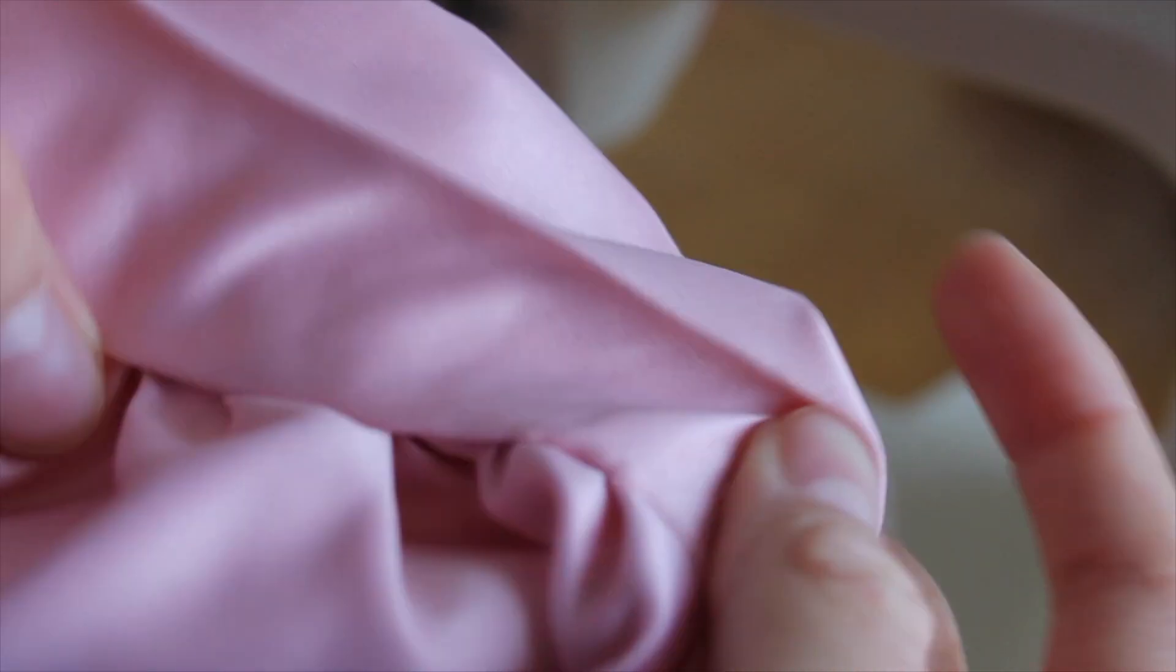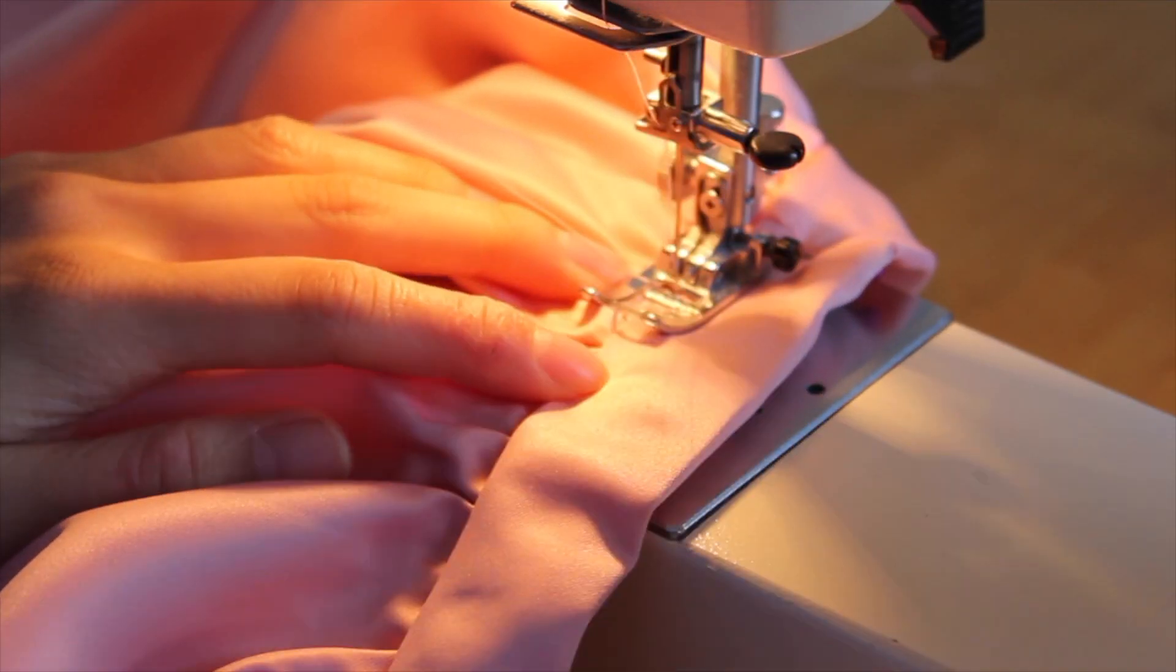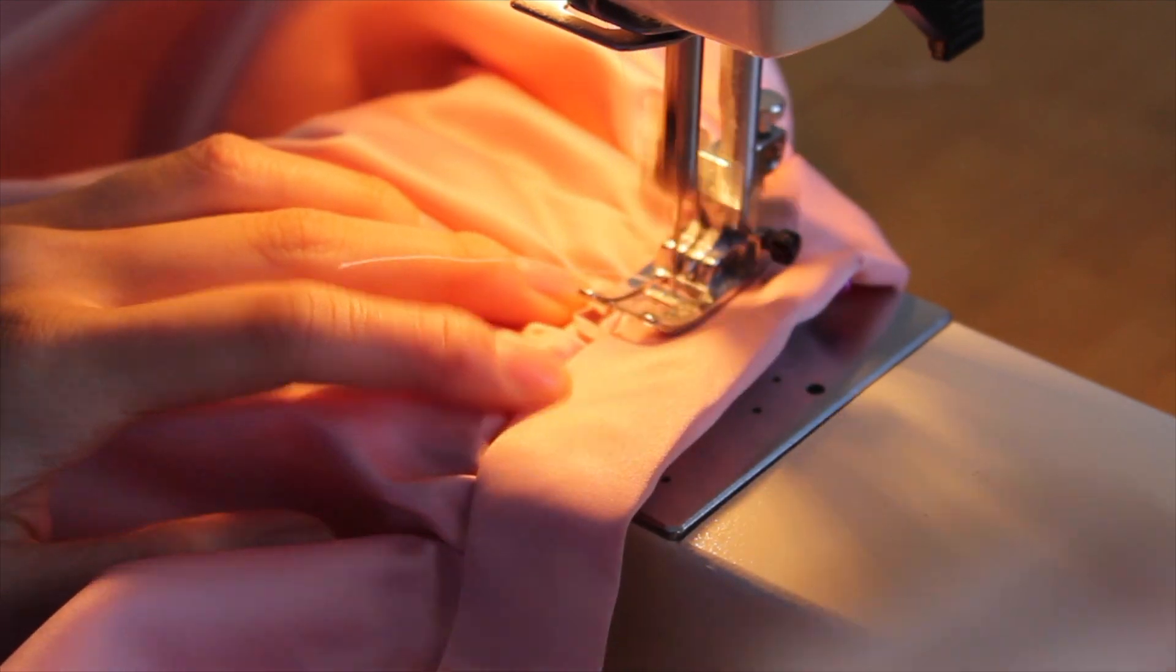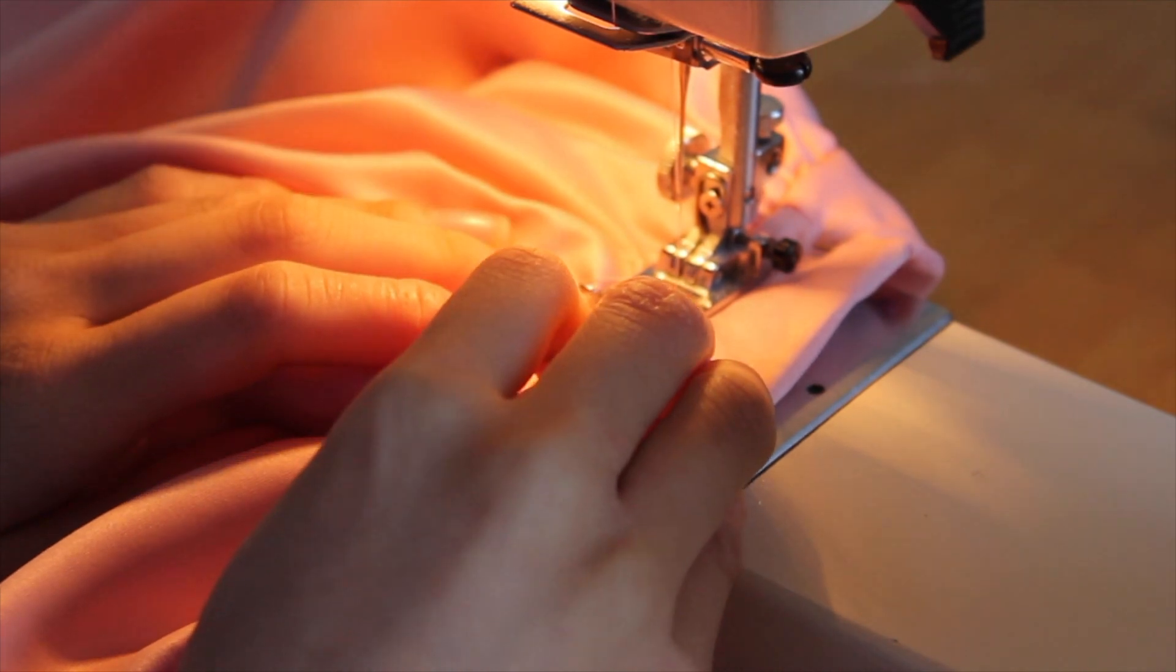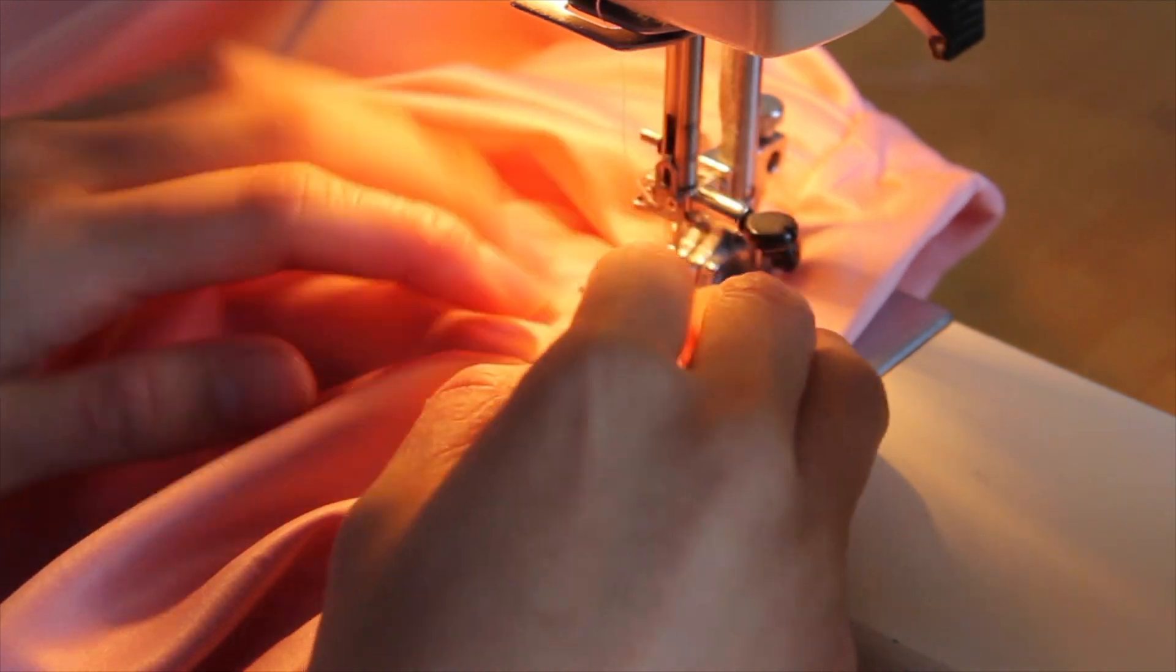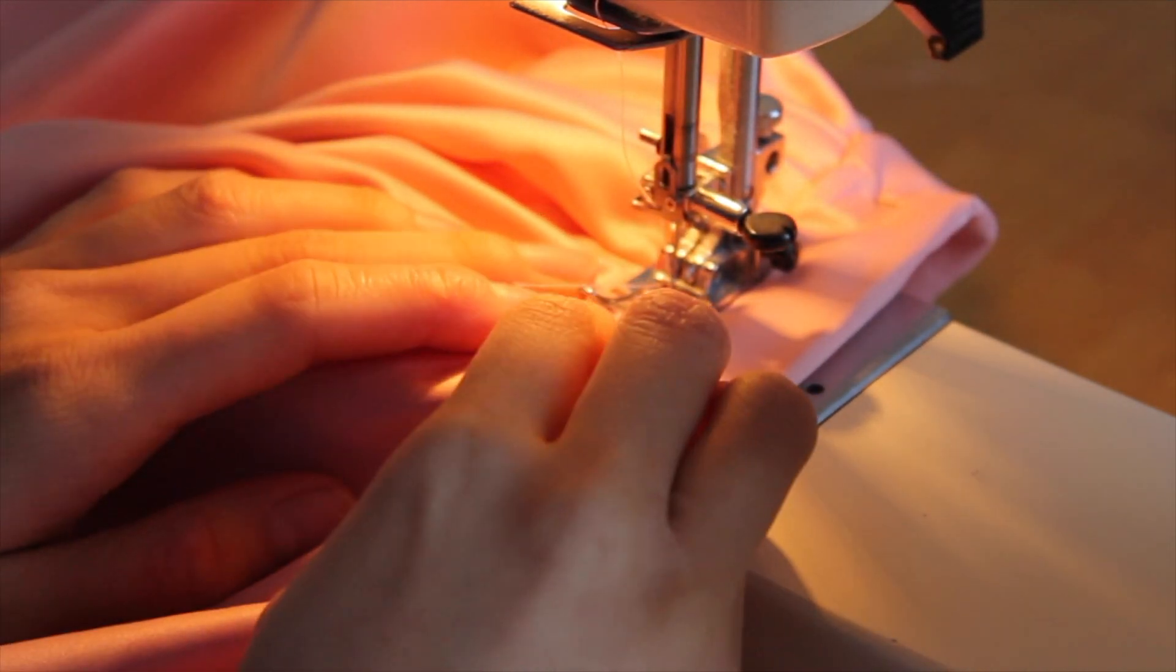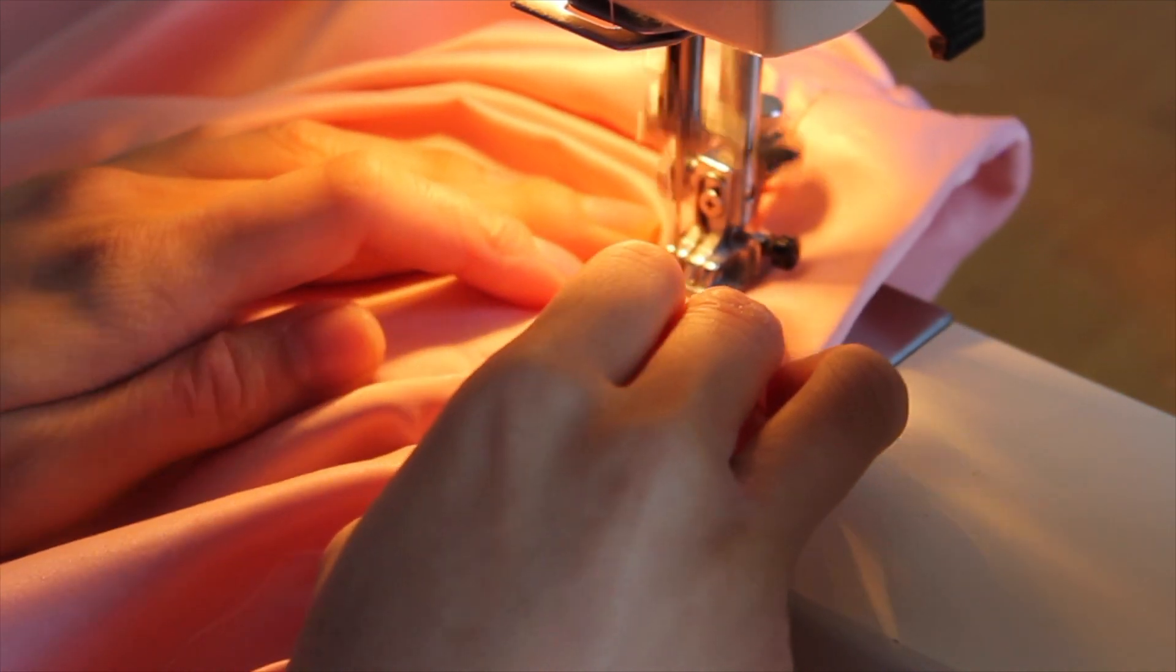After that, I iron the waistband in half and then I folded over the edge and sewed it with a straight stitch right over the ruffled edge. When sewing the waistband down, I suggest using a 1⁄8 inch seam from the edge to ensure a clean finish. You also want to make sure that you don't sew the entire waistband closed. What I did was I only sewed the long part of the waistband first and then I attached the elastic band and then proceeded to sew the shorter end of the waistband closed.